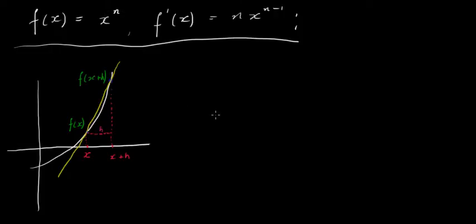So where does that come from? Well, in a previous video I did differentiation from first principles. Just briefly to run through that again without going into great detail — we had a diagram like this where we have a point x on the x-axis and we increased it by a distance h. This distance here is h, so this point here is x plus h. So these are two points on the x-axis.